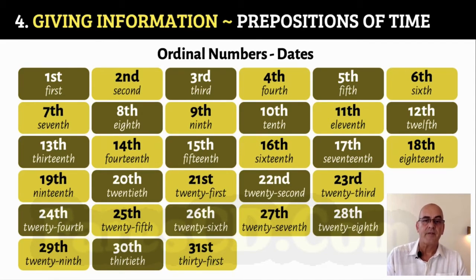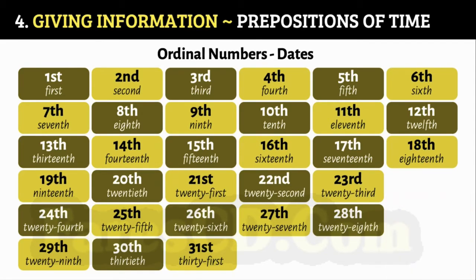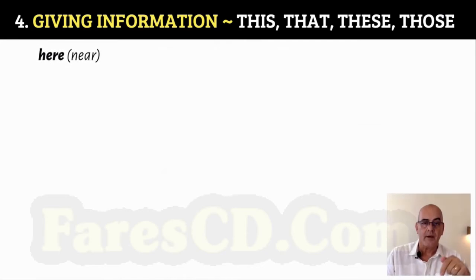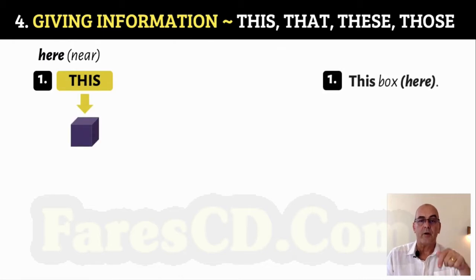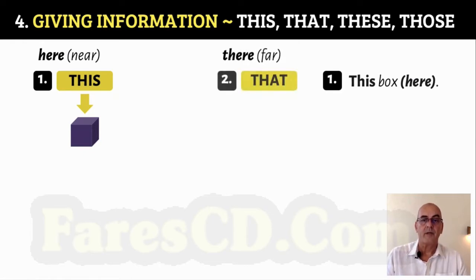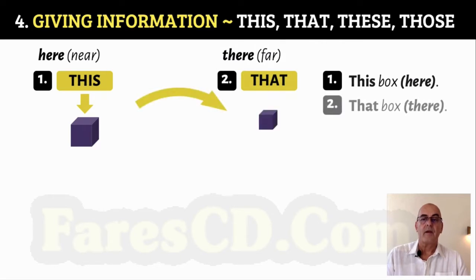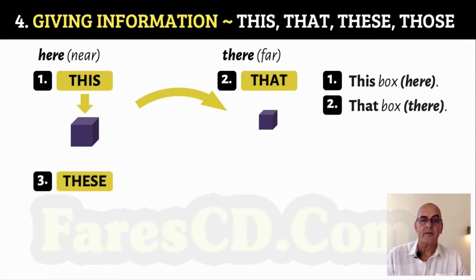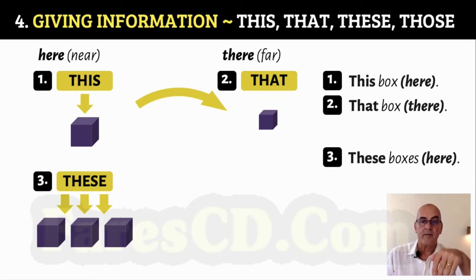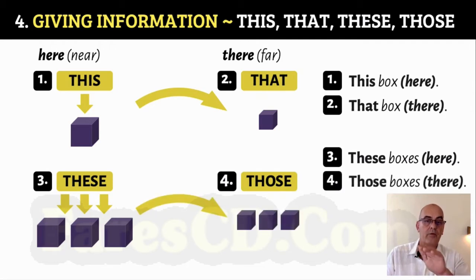Fifth, fifteenth, sixteenth. Demonstrative pronouns: this, that, these, those. 'This' and 'these' refer to things that are here, near. 'That' and 'those' refer to things that are there, far. This box here — one box. That box there — one box over there. These boxes here. Those boxes there.